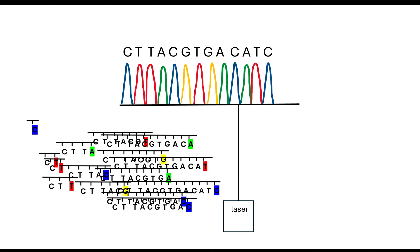In this example, the sequence reads: cytosine, thymine, thymine, adenine, cytosine, guanine, thymine, guanine, adenine, cytosine, adenine, thymine, cytosine. Because smaller fragments move faster and longer fragments move slower, each time a base goes past the laser it is identified.